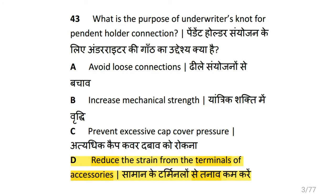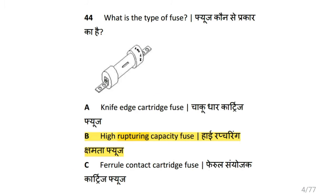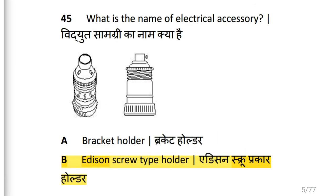What is the purpose of the underwriters knot for pendant holder connection? That is to reduce the strain from the terminals of accessories. What is the type of fuse? High rupturing capacity fuse, that is HRC fuse.